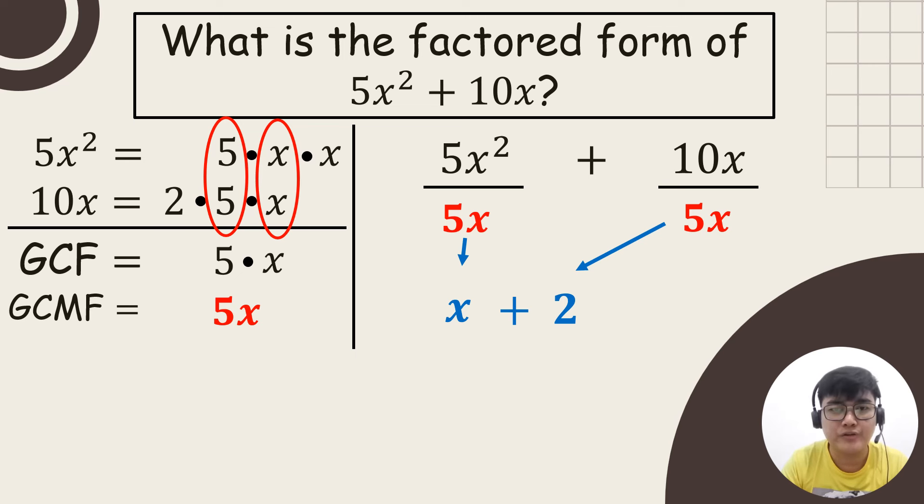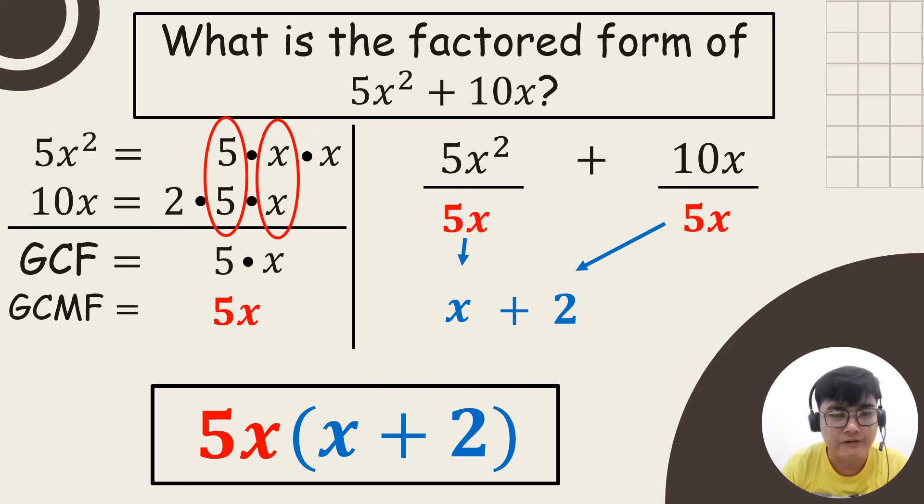Since we divided our given by the GCMF, this is now our answer. From the two answers that we got, the 5x and the x plus 2, we can get the factored form. We will list it as 5x times the quantity x plus 2. And this will be our final answer. Therefore, the factored form of 5x squared plus 10x is 5x times the quantity x plus 2.